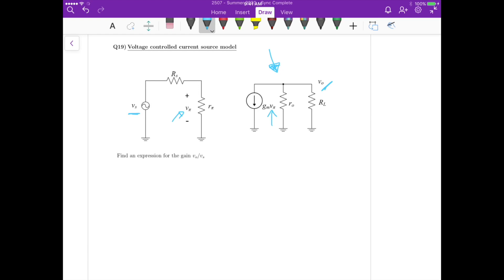The first step is to calculate Vpi in terms of Vs. If we look at this circuit, it's just a voltage divider. We take Vpi as Vs times Rpi divided by Rs plus Rpi.